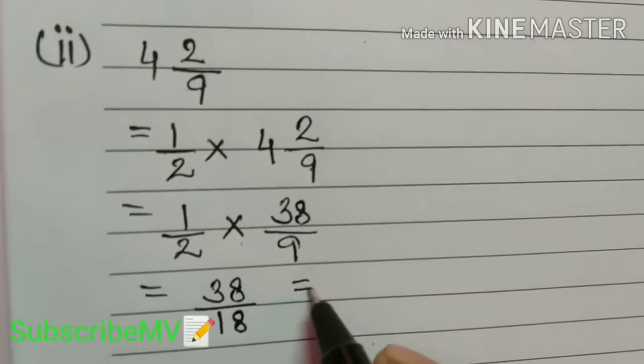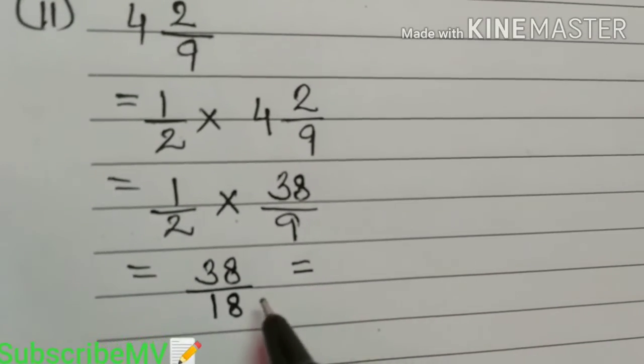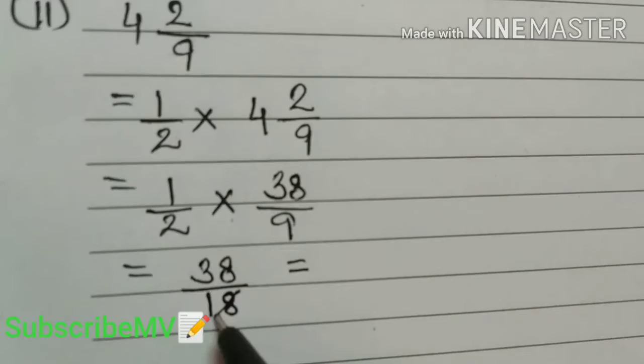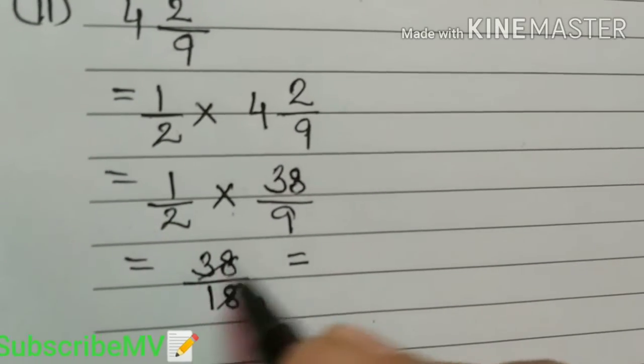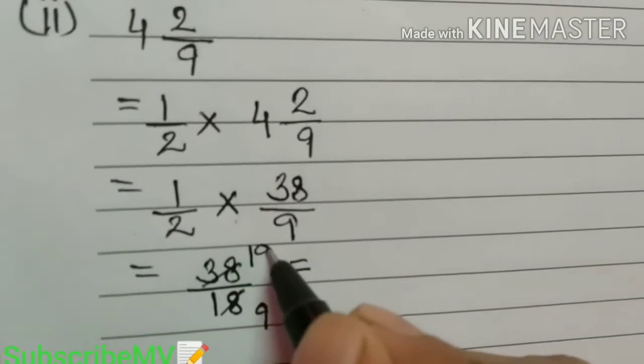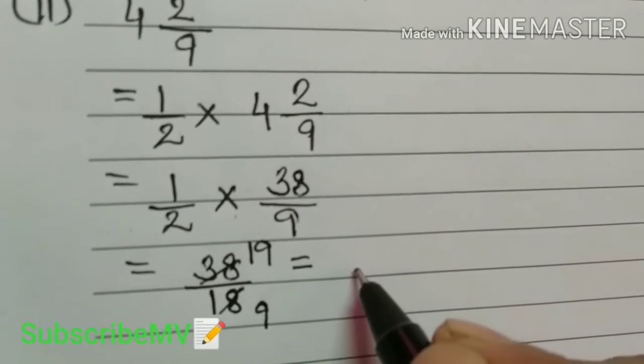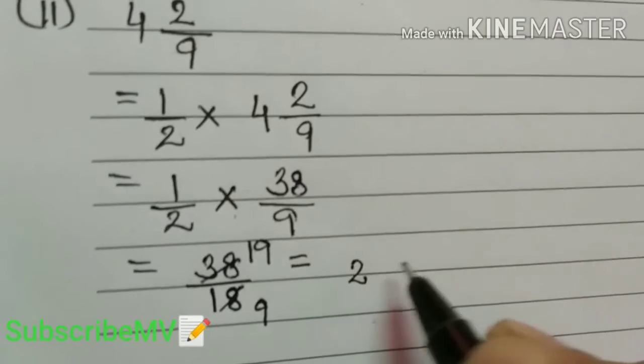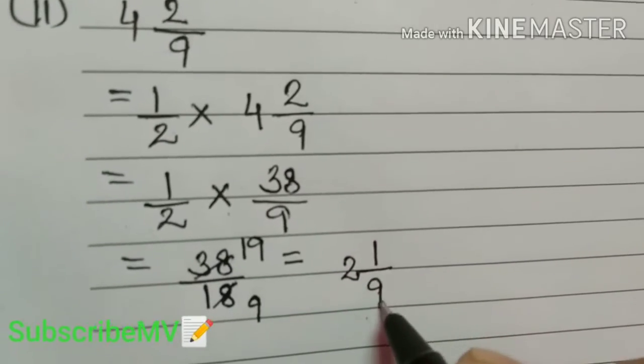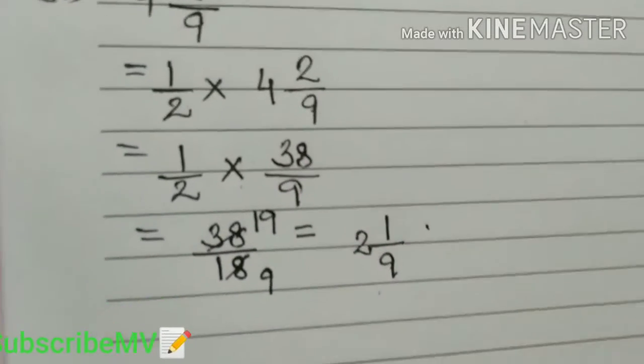So we can divide it by 2. We can cancel here, 2, 9 is the answer. So 19 by 9, that is equal to 9, so 18, remainder 2, 1 by 9 is the answer.